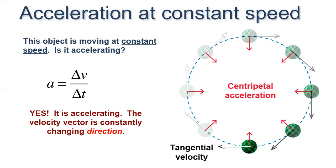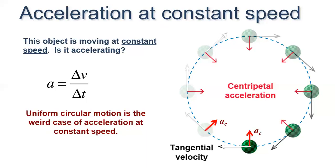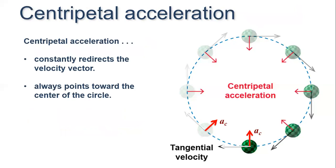This object is moving at constant speed, and the rate of change of velocity is acceleration — yes, it is accelerating. The velocity vector is constantly changing direction. Uniform circular motion is the unusual case of acceleration at constant speed. Centripetal acceleration constantly redirects the velocity vector and always points towards the center of the circle, denoted ac.